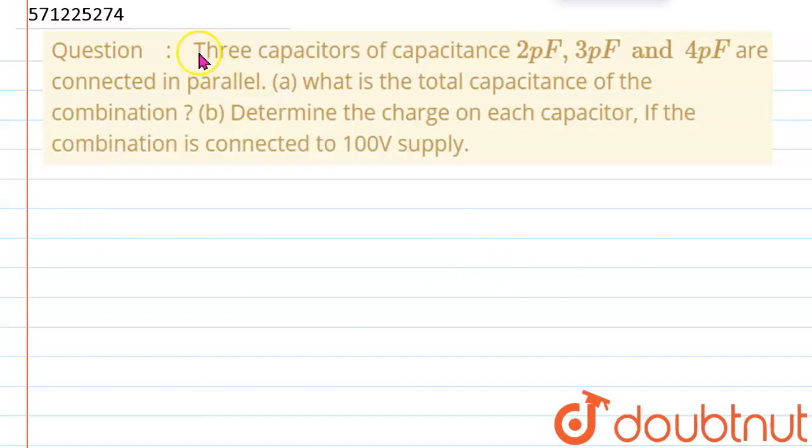Hello everyone, let's solve the question. Three capacitors of capacitance 2 picofarad, 3 picofarad and 4 picofarad are connected in parallel. What is the total capacitance of the combination and determine the charge on each capacitor if the combination is connected to 100 volt supply.